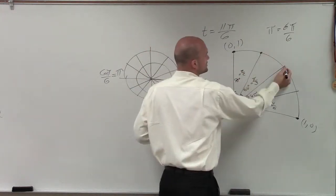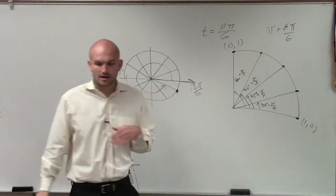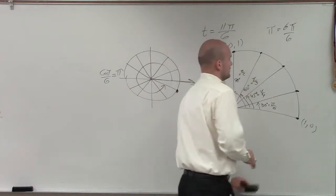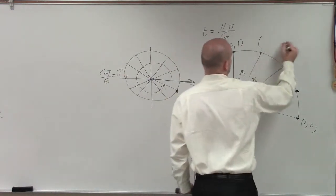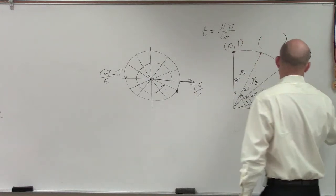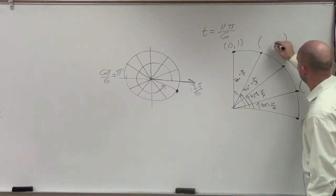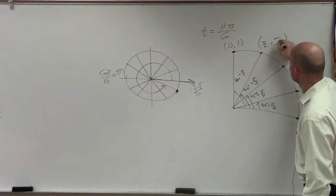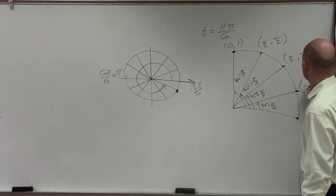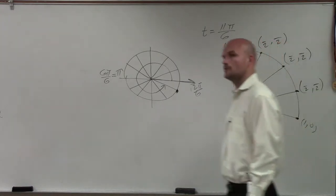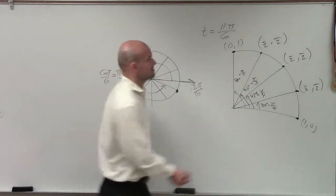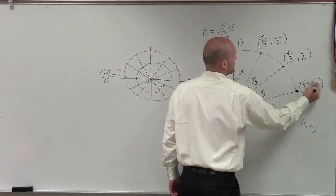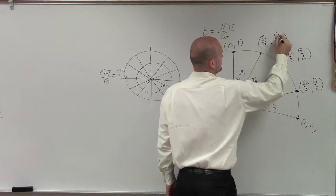For each one of these three points, if you remember from using special right triangles, we had coordinates. Let's see how we can remember what these coordinates are. Each coordinate has an x and a y, and they're all fractions. All fractions have a denominator of 2. The little trick is: square root of 1, square root of 2, square root of 3 — repeated for each coordinate. And we know square root of 1 is just 1.